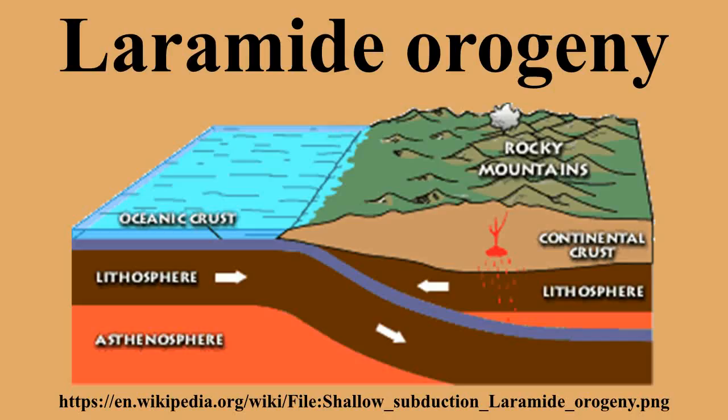The orogeny is commonly attributed to events off the west coast of North America, where the Kula and Farallon plates were sliding under the North American plate. Most hypotheses propose that oceanic crust was undergoing flat-slab subduction with a shallow subduction angle, and as a consequence, no magmatism occurred in the central west of the continent, and the underlying oceanic lithosphere actually caused drag on the root of the overlying continental lithosphere.